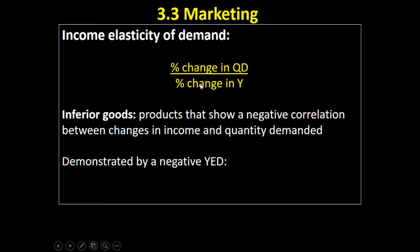Inferior goods are demonstrated by a negative YED. So if there's a positive change in income at the bottom of the equation, there would be a negative change in quantity demanded at the top — a negative correlation between the figures. Inversely, if incomes go down, the quantity demanded of an inferior good goes up — people get relatively less well off and switch to consuming inferior goods. Examples of negative YED values include minus 0.5, minus 1.6, minus 2.8 — anything with a minus sign indicates the good is inferior.